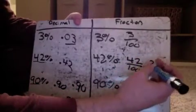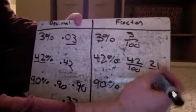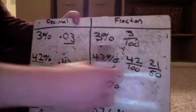42%. 42% is 42 over 100, which can be reduced. And cutting it in half, dividing it by 2 is going to be 21 50ths, which is all we can do.